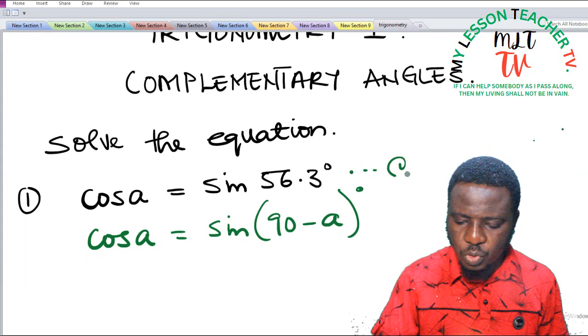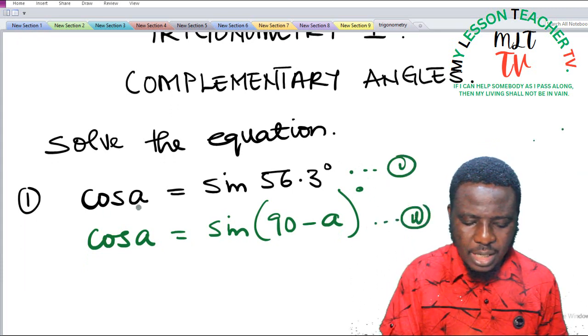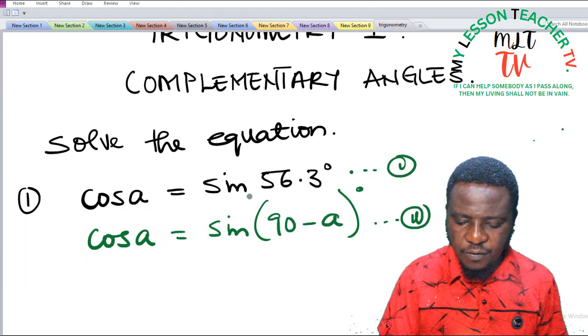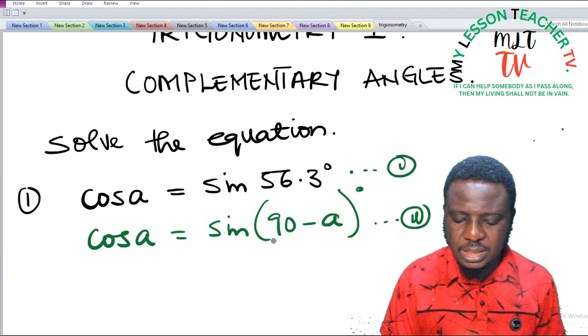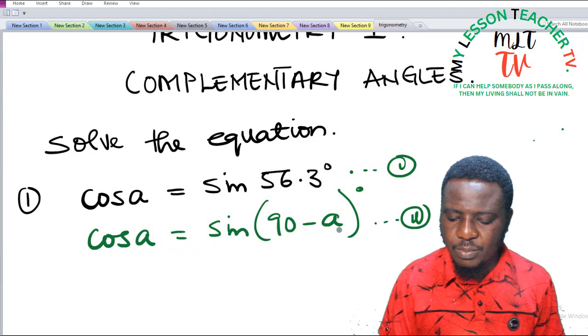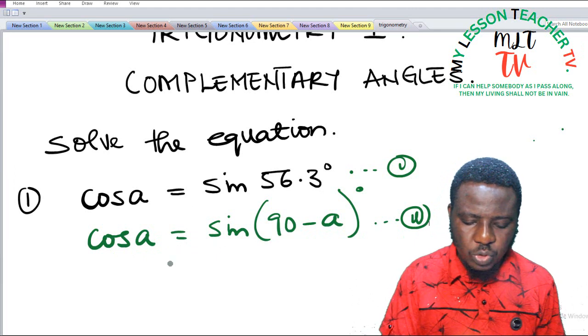If we call this equation 1 and call this equation 2, equation 1 is stating that cos A is equal to sine 56.3, and equation 2 is saying cos A is equal to sine of 90 minus A. That means that equation 1 is equal to equation 2.